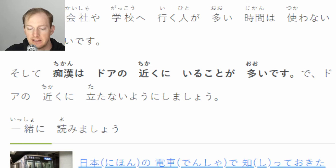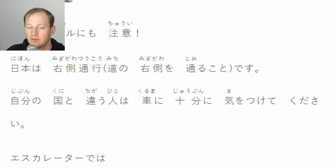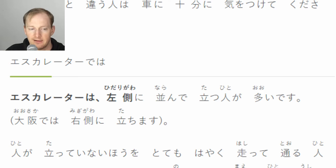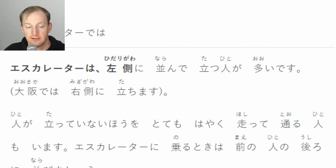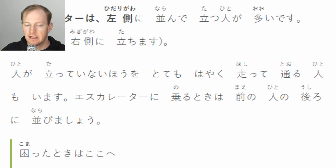交通ルールにも注意。日本は左側通行です。自分の国と違う人は、車に十分に気をつけてください。エスカレーターは、左側に並んで立つ人が多いです。大阪では、右側に立ちます。人が立っていない方をとっても速く走って通る人もいます。エスカレーターに乗るときは、前の人の後ろに並びましょう。